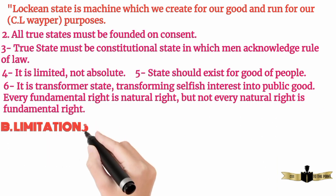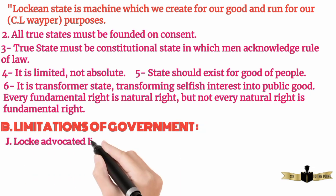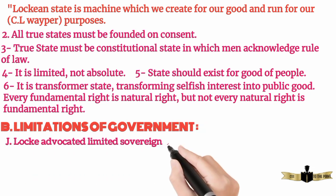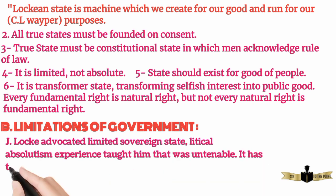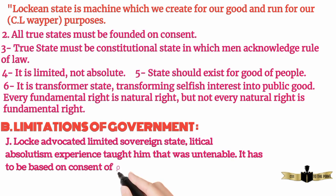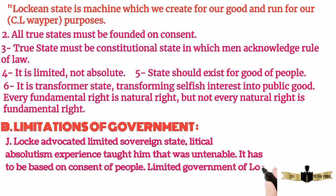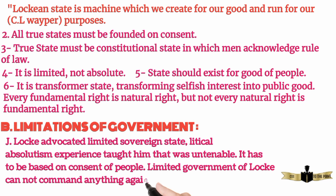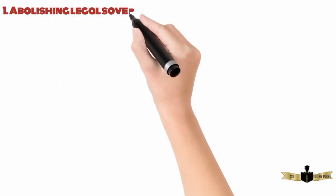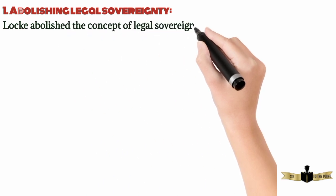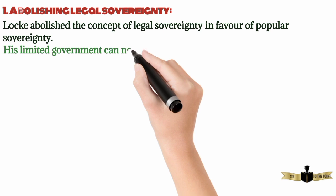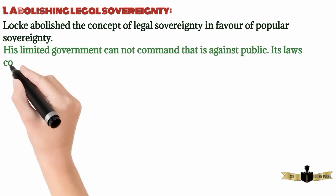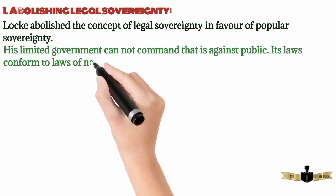B. Limitations of Government. Locke advocated a limited sovereign state, against political absolutism. Experience taught him that absolutism was untenable. It has to be based on the consent of the people. The limited government of Locke cannot command anything against the public interest. A. Abolishing legal sovereignty. Locke abolished the concept of legal sovereignty in favor of popular sovereignty. His limited government cannot command that which is against the public. Its laws conform to the laws of nature and God.